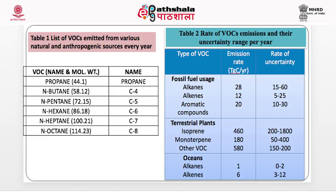From terrestrial plants — a natural emission source — mainly isoprenes, monoterpenes, and other biogenic organic compounds (BOCs) are emitted in very high amounts. Oceans also serve as a source of VOC emissions, including alkanes and alkenes. Large numbers of organic compounds are thus emitted from both natural and anthropogenic sources.